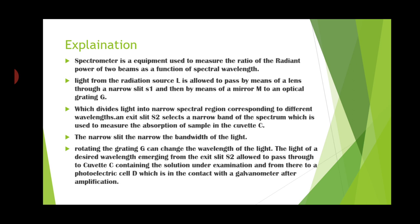The narrower the bandwidth of the light, the more precise the measurement. Rotating the grating G can change the wavelength of the light. The light of the desired wavelength emerging from exit slit S2 is allowed to pass through cuvette C containing the solution under examination, and from there to a photoelectric cell D which is connected to a galvanometer after amplification.